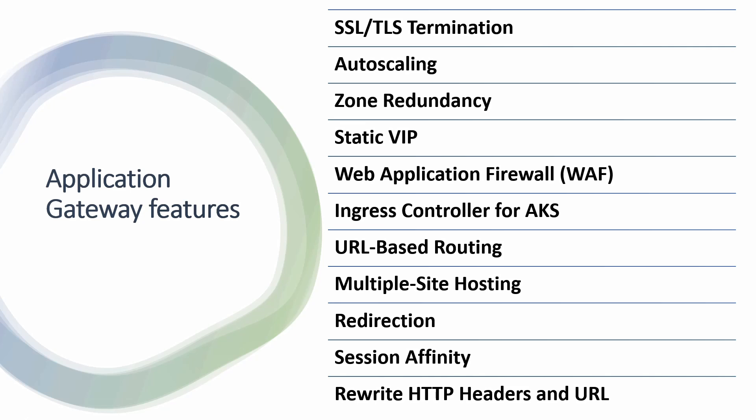Next is URL-based routing. Application Gateway checks the URL of the traffic and uses different routing rules for different backend servers — for example, if there's 'music' in the URL it routes to the music backend server, and if there's 'video' it routes to the video backend server. Another important feature is multi-site hosting, allowing you to host multiple domains. You create separate routing rules and backend servers, and Application Gateway redirects traffic based on URL or HTTP headers.